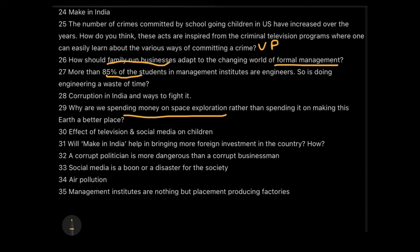Topic 30: Effect of television and social media on children — quite a direct topic. Topic 31: Will Make in India help bring more foreign investment into India and how? You need to know the plans and purposes of the Make in India initiative; this is a current-affairs-based topic. Topic 32: A corrupt politician is more dangerous than a corrupt businessman — of course, you need to support this with examples. Topic 33: Social media — a boon or a disaster for society? This is a very, very common argumentative essay topic.